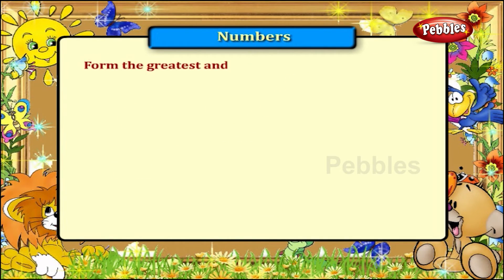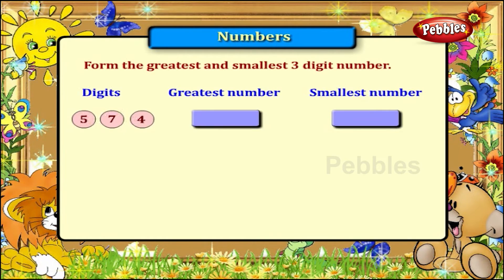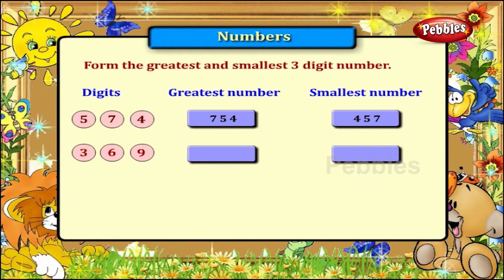Form the greatest and smallest three-digit number using these digits. 5, 7, 4: the greatest number is 754 and the smallest number is 457. 3, 6, 9: the greatest number is 963 and the smallest number is 369.